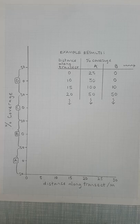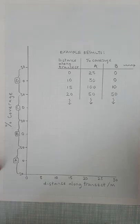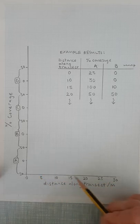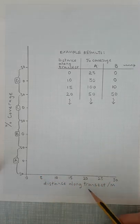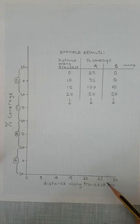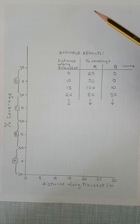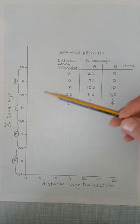So this x-axis is showing you the distance along the transect, and the y-axis is a little bit different to what you usually get. It's showing you the percentage coverage, and in my example I've got four species of plants: A, B, C, and D.